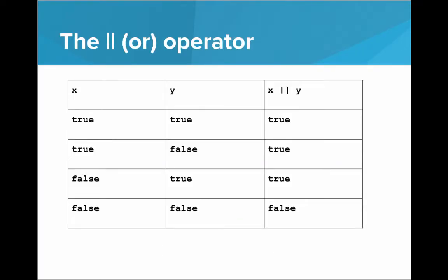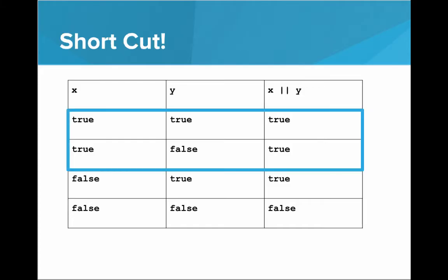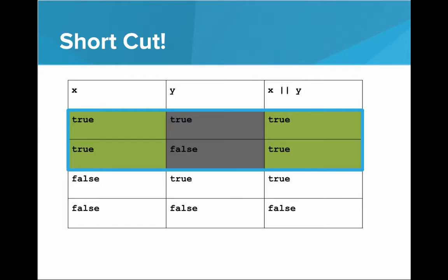Similarly, with 'or', when we're evaluating x or y, the only way for this to be false is if both x and y are false. If one of the inputs is true, the whole thing will end up being true. So if x is true, then the entire x or y will end up being true. We don't even have to look at the second argument — true or anything is true.